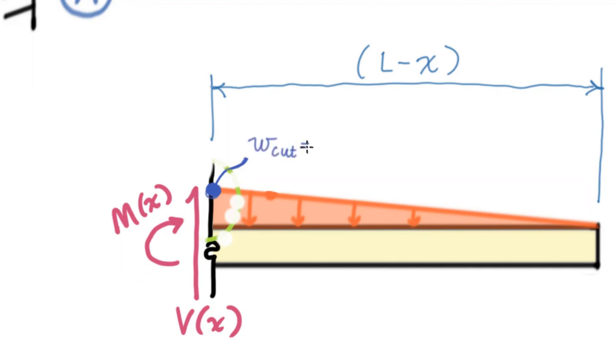And you might be tempted at this point to expand that, right? To do like w_0 minus w_0 times x. There is a strategic advantage in this problem to kind of leaving the L minus x term intact as long as you possibly can.